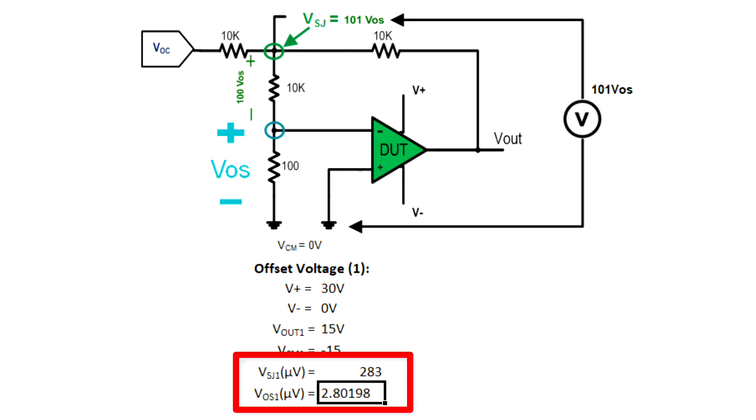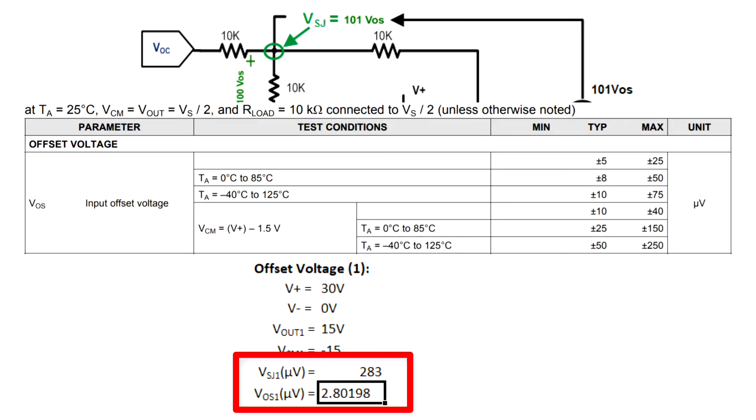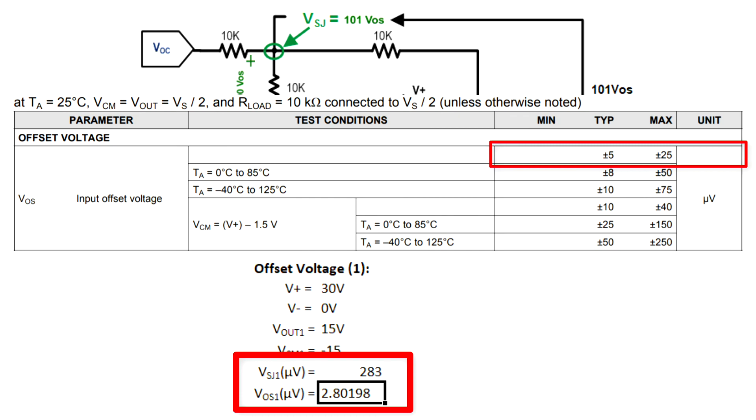The offset voltage of the OPA 192 is approximately equal to 2.8 microvolts, which is within the TI datasheet.